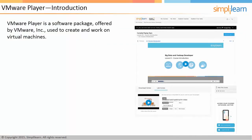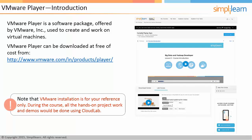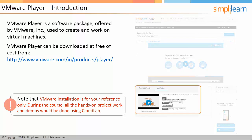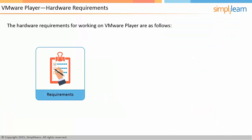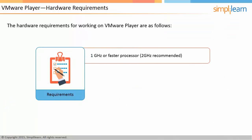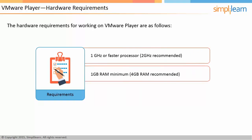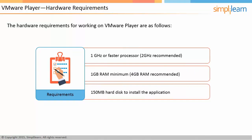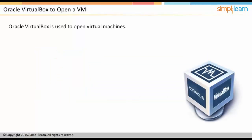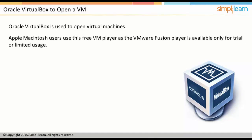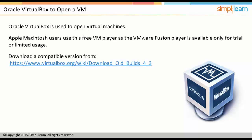VMware Player is a free software package offered by VMware Incorporated used to create and manage virtual machines, and can be downloaded for personal use from the URL mentioned. The image shows where to access CloudLab — click Lab Access to get the relevant screen. Basic hardware requirements for VMware Player include a 1 GHz processor supporting Intel VT, 1 GB of RAM, and 150 MB of hard disk space; however, a 2 GHz processor and 4 GB of RAM are recommended for optimum performance. Oracle VirtualBox is used to open virtual machines; Apple Macintosh users should download the latest version of VirtualBox compatible with their machine and firewall settings from the URL provided.